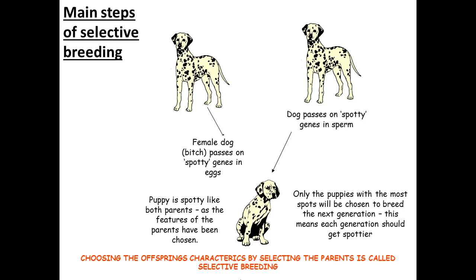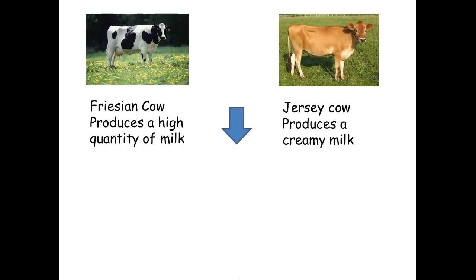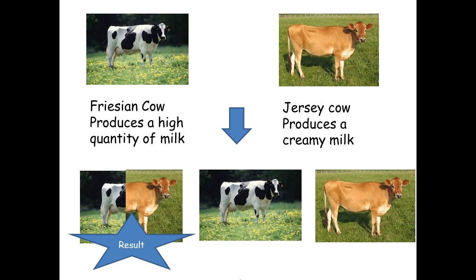Choosing the offspring's characteristics by selecting the parents is called selective breeding. When you select parents with a specific characteristic and you want that characteristic in the next generation, you are doing selective breeding. Another example could be crossing a Friesian cow and a Jersey cow — the first able to produce high quantity of milk, the second to produce creamy milk. A farmer will selectively breed these two cows.